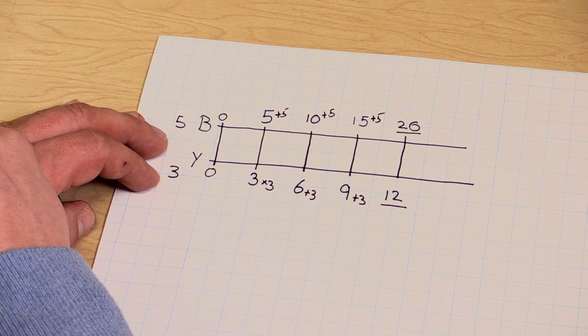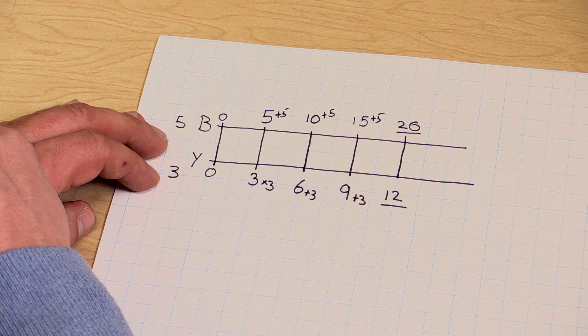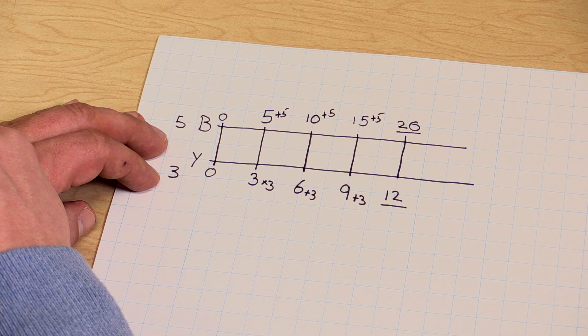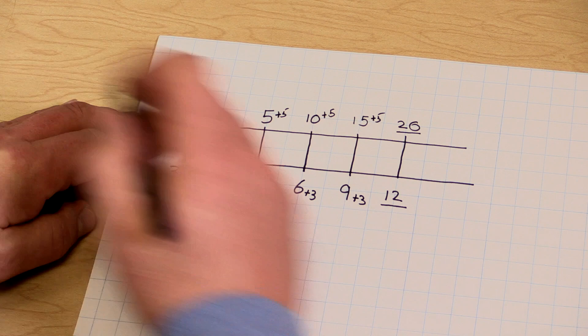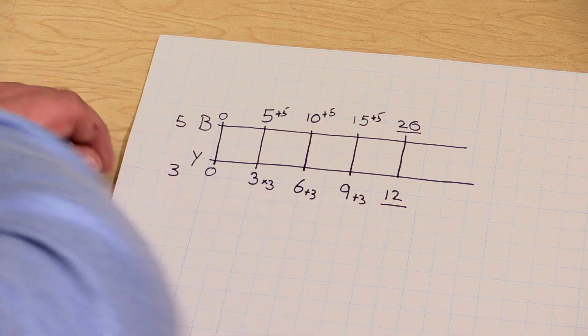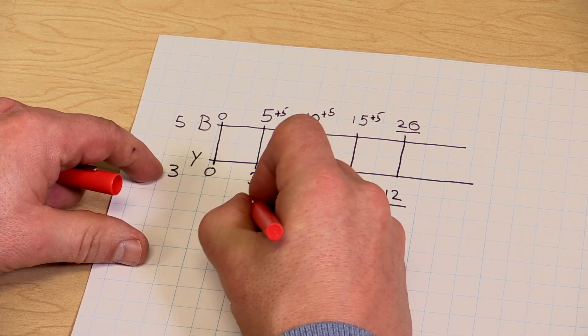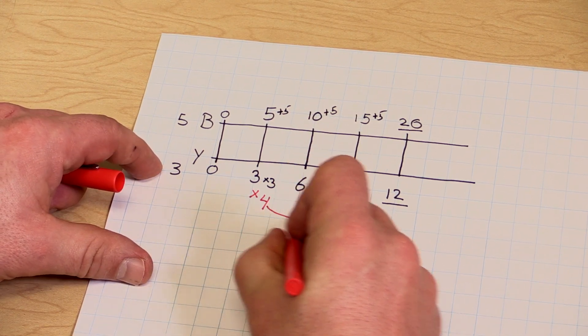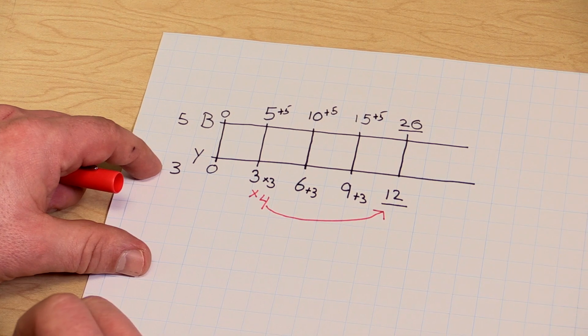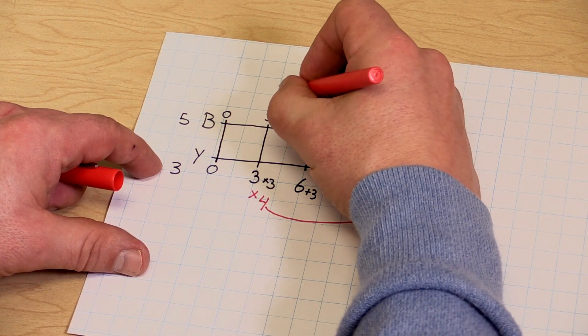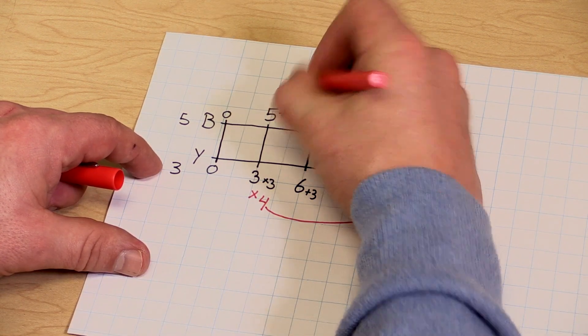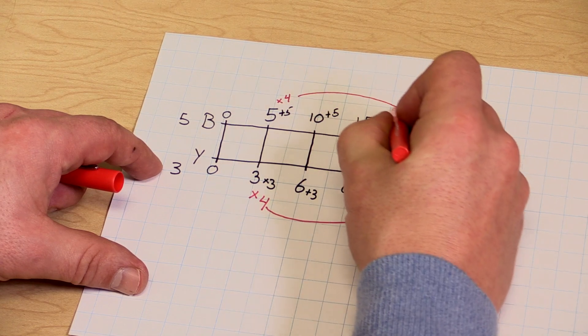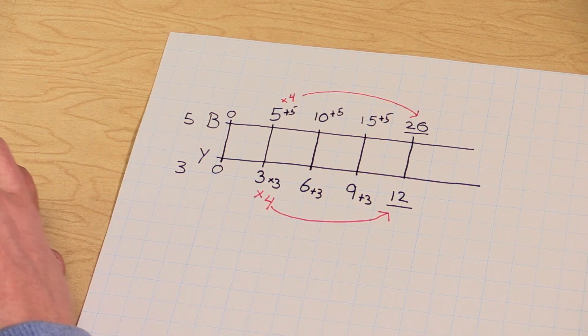This is called additive thinking. Eventually, we'd like to move to multiplicative thinking. Students will develop the concept on their own, and they might see that she needed to use 3 cups of yellow paint 4 times, which would be 12. And she would need to use 5 cups of blue paint 4 times, which would equal the same answer of 20 cups of blue paint.